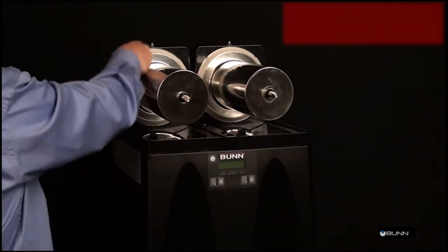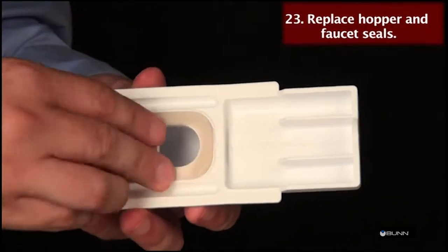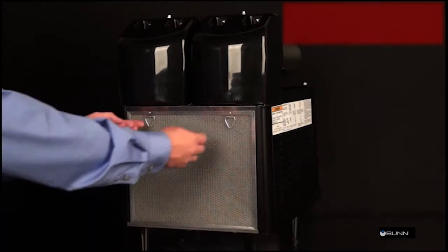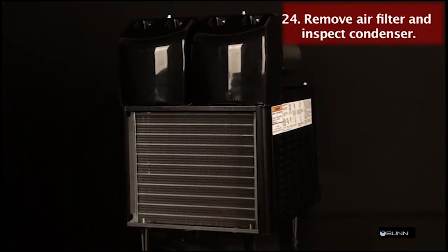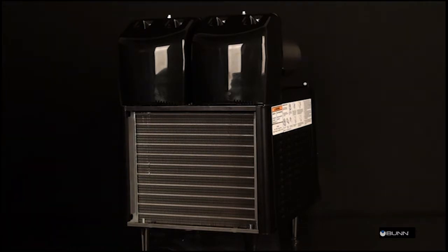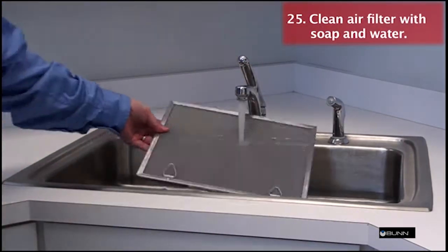Install new hopper drum seals and faucet seals included in the kit. Inspect the condenser every 6 months. Gently vacuum condenser fins and wipe down motor fan blades. Clean air filter with warm soapy water.